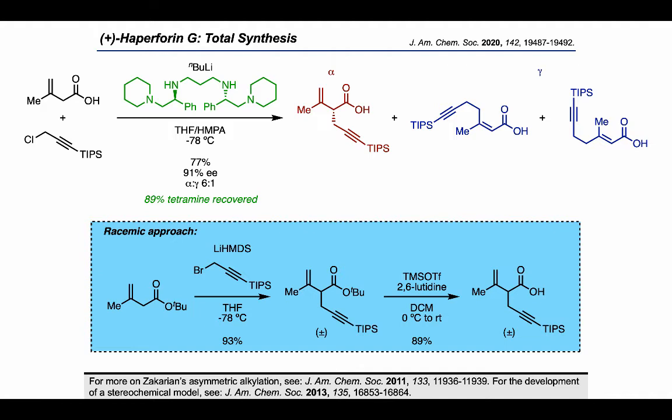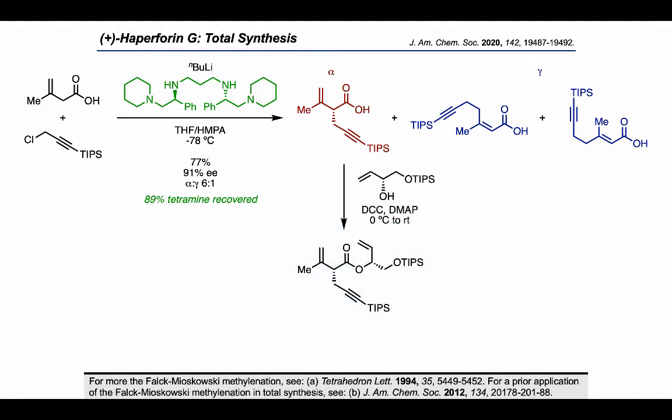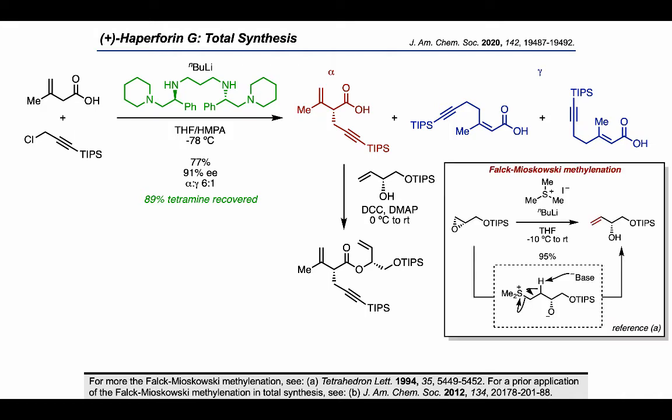Going back to the asymmetric route, the authors carried on their enantioenriched carboxylic acid intermediate and used a DCC coupling to install a chiral sidechain. As a side note, this sidechain was accessed using a Falck-Moskowski methylation on an enantioenriched terminal epoxide, where the epoxide could be opened with a sulfur ylide nucleophile, which subsequently underwent an elimination to form the terminal alkene. Using this strategy, it was possible to rely on glycidol as a source of commercial chirality for this piece.